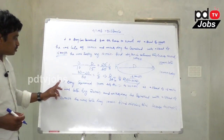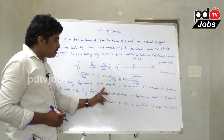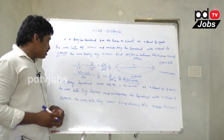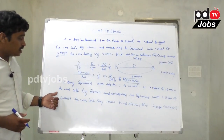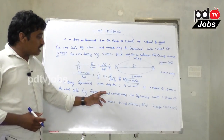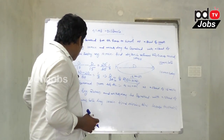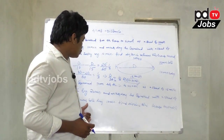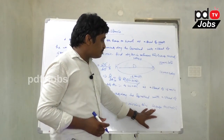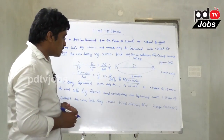Again, a similar question. A boy travelled from his house to school at a speed of 15 kmph and was late by 20 minutes. Another day he travelled with a speed of 20 kmph and was late by 10 minutes. Find the distance between his house and school.